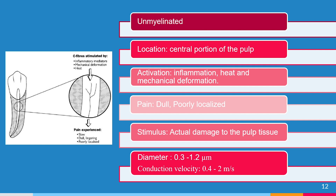Since C-fibers are located deep inside the pulp, their involvement indicates extensive damage — the damage has reached the core of the pulp, meaning irreversible pulpitis. Another key difference involves hypoxia: A-fibers are thicker and consume more oxygen, so when oxygen supply is interrupted they die, while C-fibers continue to function. In cases of trauma causing hypoxia, if a cold CO2 stick placed on the tooth produces no response, it means the A-fibers are already dead.